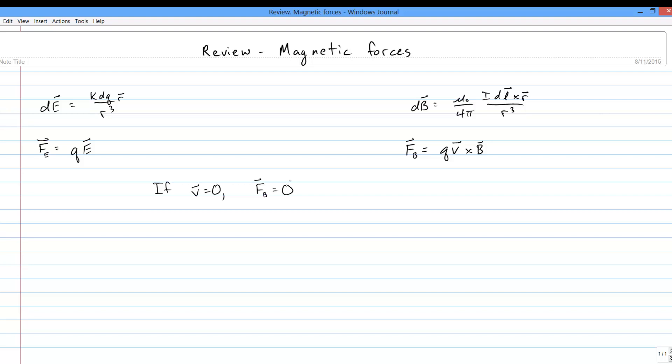Contrarywise, you get the maximum possible force if the velocity is perpendicular to the field. And finally, since the force law involves a cross product, the magnetic force is always perpendicular to both the particle's velocity and the magnetic field. This makes magnetic force problems intrinsically three-dimensional.